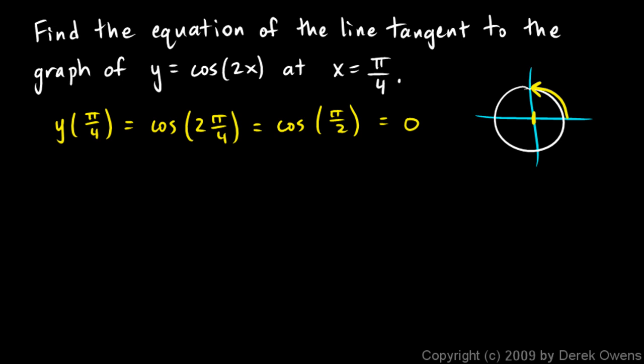Now let's find the derivative at that point. Well, the derivative of the function, y primed, is going to be the derivative of the cosine function, which is the negative sine function. So I have negative sine of 2x times the derivative of the inner function, which is just 2. So let's write that as negative 2 sine 2x.